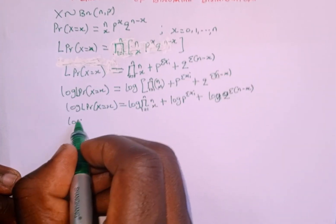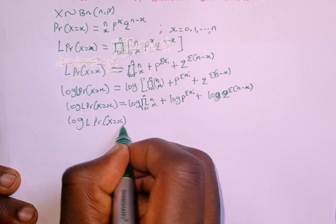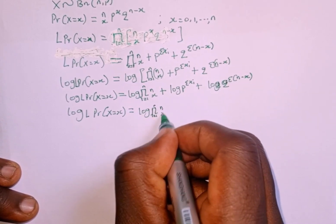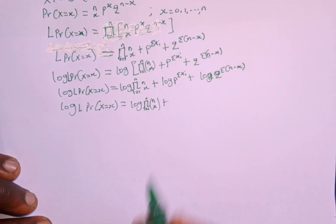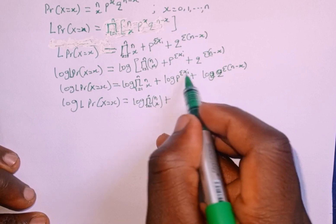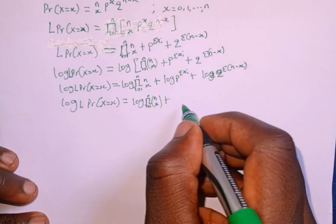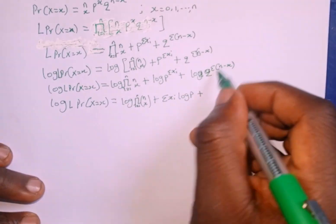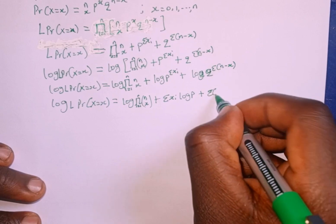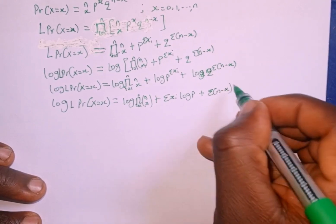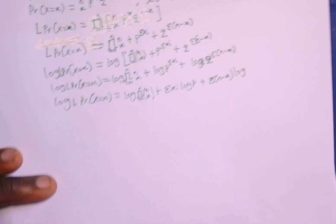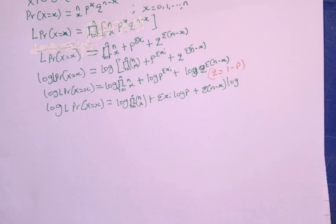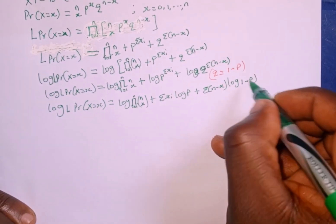Simplifying further, log of likelihood of P(X = x) equals log of the product from i = 1 to n of n-combination-x, plus summation of x_i times log p — since the power comes down by the logarithm property — plus summation of (n minus x) times log q. Recall that q is the same as 1 minus p, so we replace q with (1 minus p) in the expression.